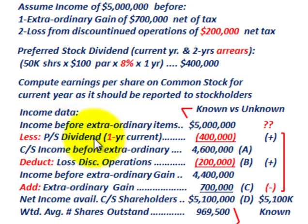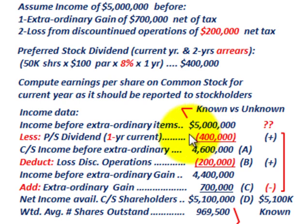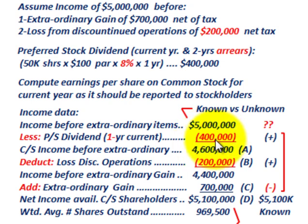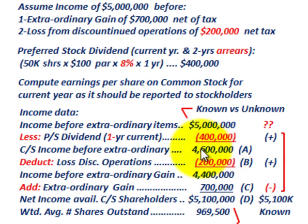Now we have to subtract out the preferred stock dividends for the current year. Even if they're not paid for the current year, they still have to be deducted from the income before the extraordinary items. Anything in arrears wouldn't be included — it's only for that current year. So subtracting the current year's preferred stock dividend of $400,000 from $5 million gives us common stock income before any extraordinary items of $4,600,000.